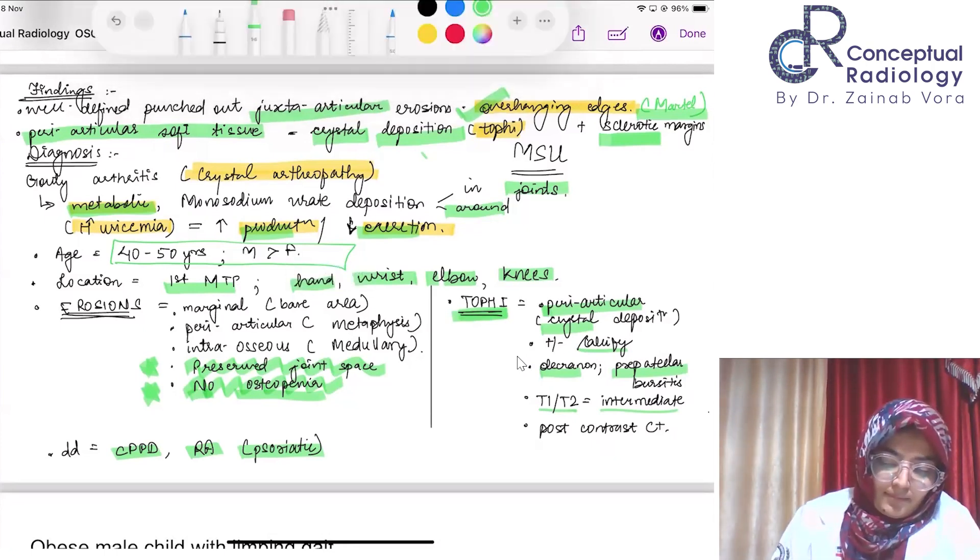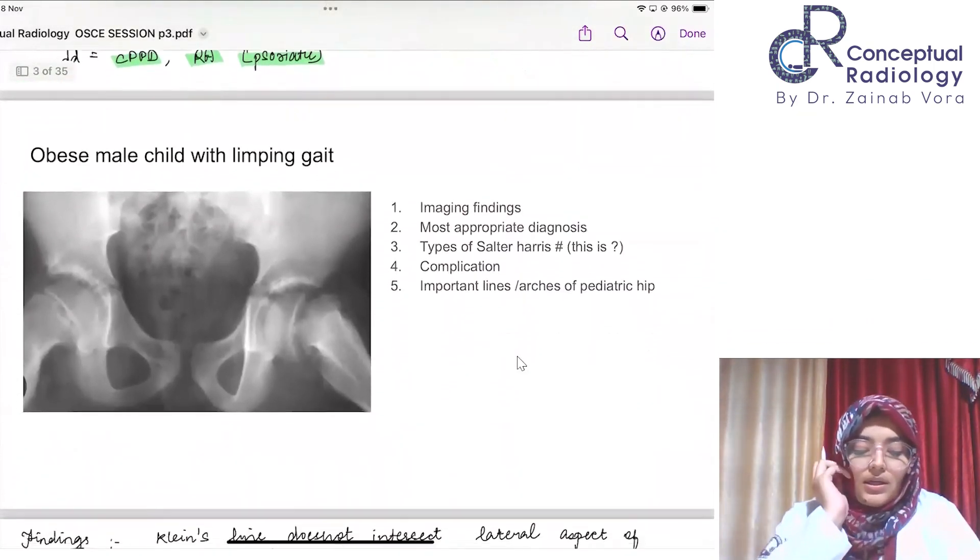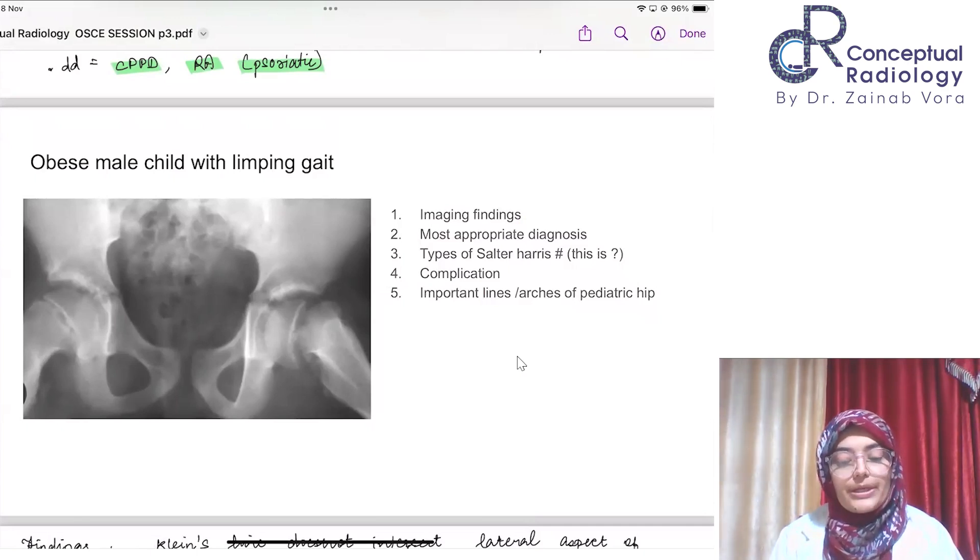This is an obese male child. I'll help you a little bit with the age of the child—it's not a very young child, he's like 13-14 years age group, a teenager. An obese teenage boy who is having limping gait. First, your findings, most appropriate diagnosis. You have to tell me about the types of Salter-Harris fractures and if this diagnosis falls into any type of Salter-Harris. Important complications of this disease process and important lines, angles, and arches in pediatric hip. Take your time, you have one minute.